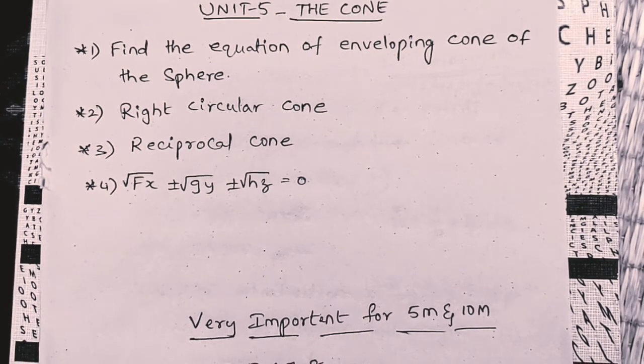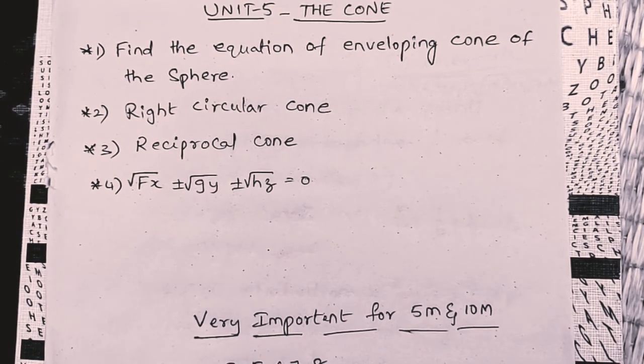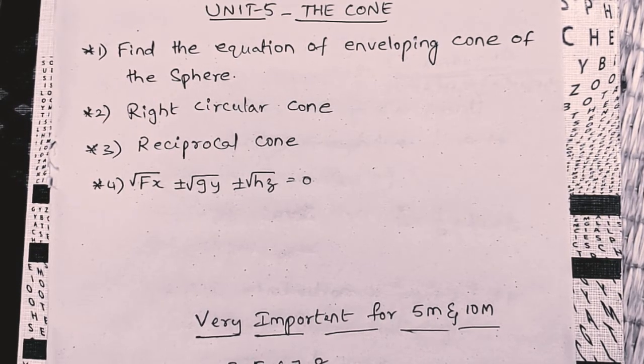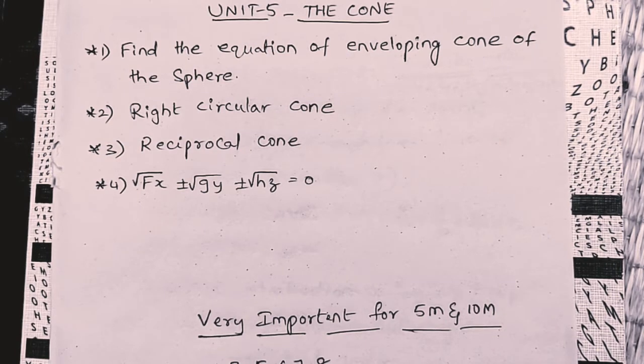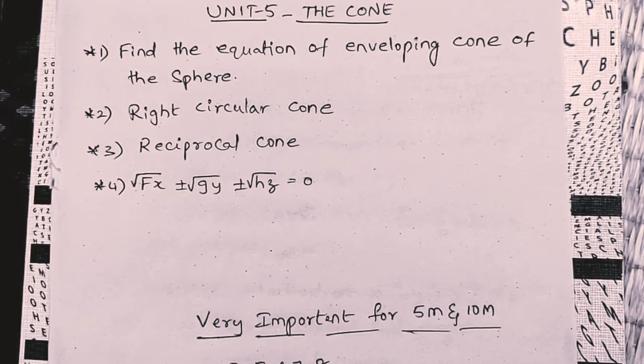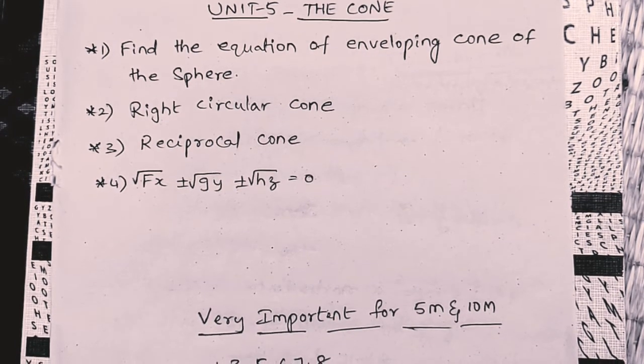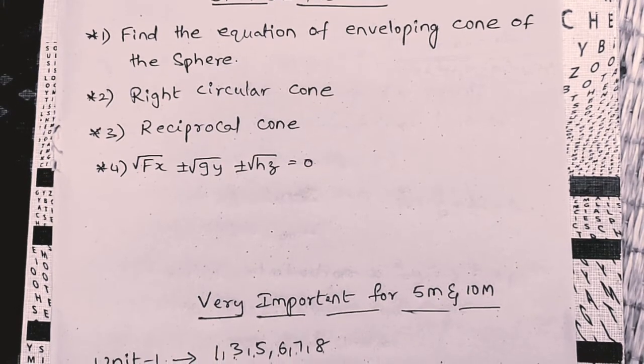Find the equation of the enveloping cone of the sphere. Right circular cone. Reciprocal cone. Root fx plus r minus root gy plus r minus root hy equals 0. And here we have only three methods of concentration. Enveloping cone, right circular cone, reciprocal cone. So, remaining 5 marks point of view already.